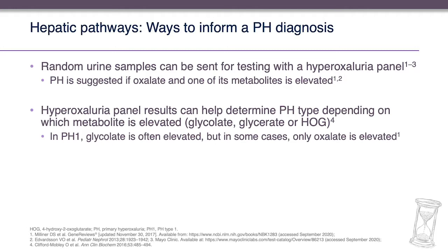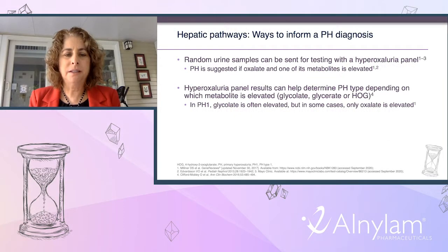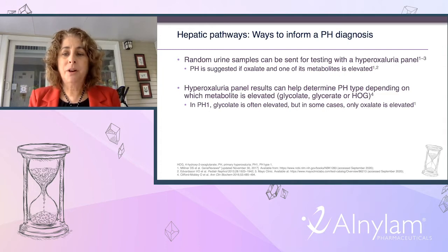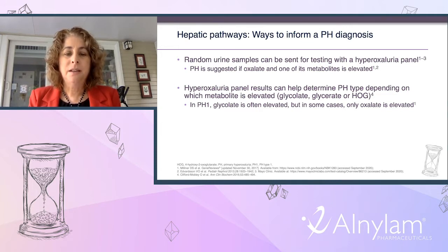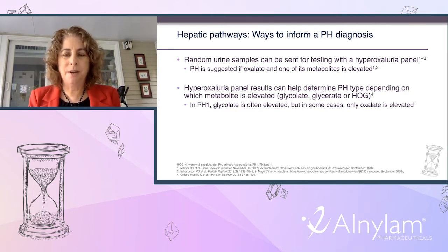Based on these hepatocyte pathways, you can send a random urine sample for a hyperoxaluria panel. Primary hyperoxaluria can be suggested if oxalate and one additional metabolite is elevated. The panel helps determine the type depending on which metabolite is elevated: glycolate, glycerate, and HOG can be elevated in types 1, 2, and 3, respectively. In primary hyperoxaluria type 1, glycolate is often elevated, but in some cases only the oxalate is elevated.